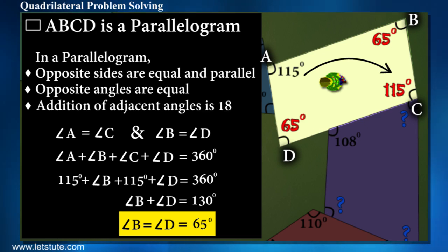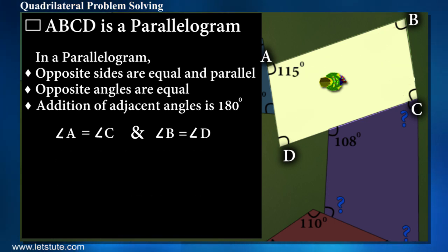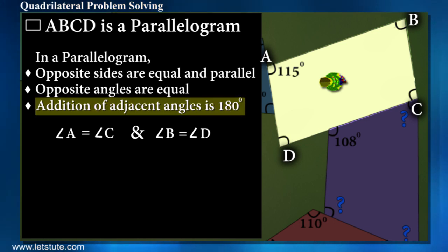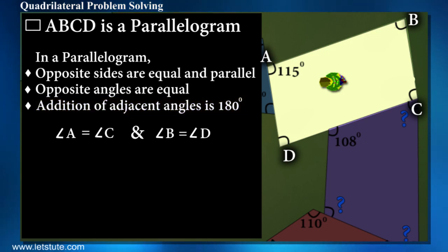Here is another approach for solving the third block. There is one more relation other than that of opposite angles in a parallelogram, that addition of adjacent angles of a parallelogram is 180 degrees. So both the neighboring angles of the angle 115 degrees will become 65.